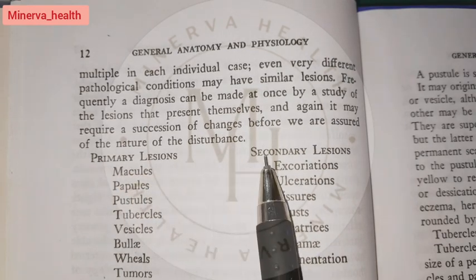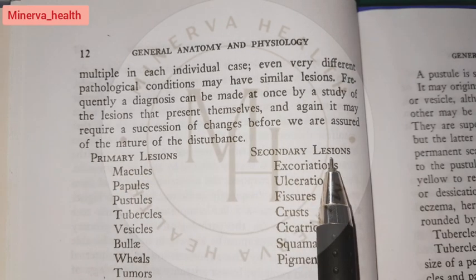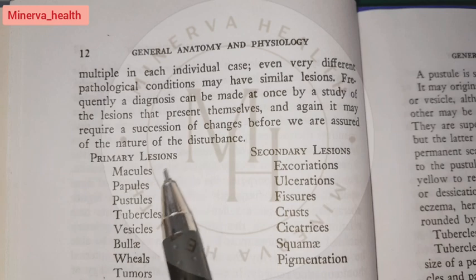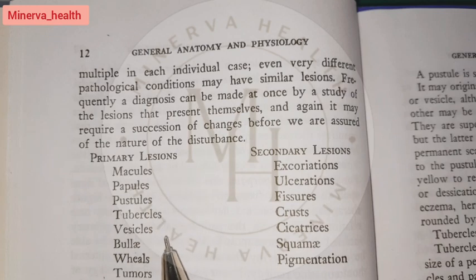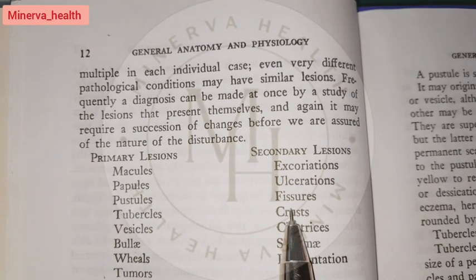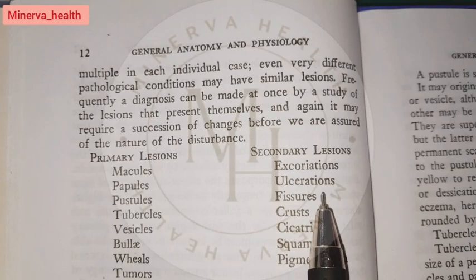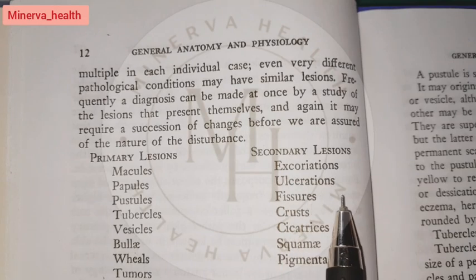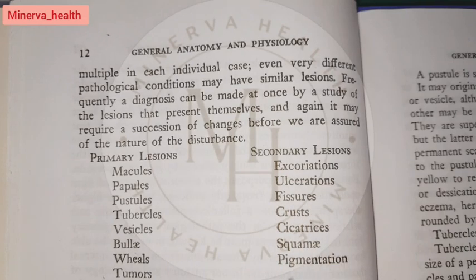Primary lesions and secondary lesions: Primary lesions include macule, papule, pustules, tubercles, vesicle, bullae, wheals, and tumour. Secondary lesions include excoriations, ulcerations, fissures, crust, cicatrices, squames, and pigmentation.